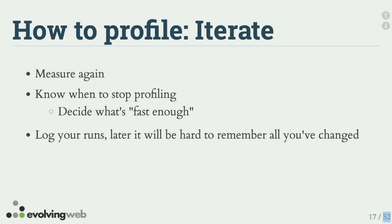The next step is I for Iterate, which means keep measuring again. You've made a fix, you've confirmed it helps — now don't stop, because there's going to be more things to look at and fix. At some point you're going to have to know when to stop — what is fast enough — and that goes back to user expectations and your business goals. Another important thing: please try to log your runs and keep detailed notes. If you use something like Blackfire, it makes it easy to keep a historical record of all your profiles. With XHProf, there was no way of labeling them, so after a day of using it I was just left saying, 'What do I do with all these?'